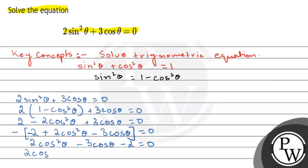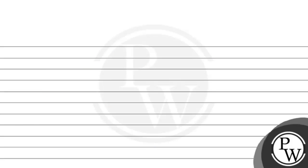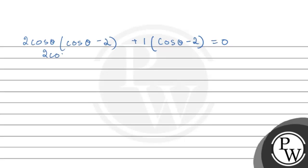Using middle term splitting: 2 cos squared theta minus 4 cos theta plus cos theta minus 2 equals 0. Factoring: (2 cos theta plus 1)(cos theta minus 2) equals 0.